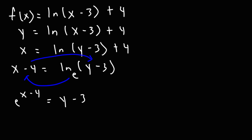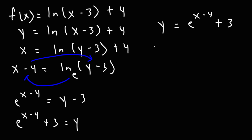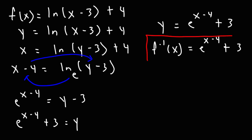In order to solve for y, we need to add 3 to both sides. If we move negative 3 from the right side to the left, it's going to change from negative 3 to positive 3. So we're going to have e raised to the x minus 4 plus 3 is equal to y. Next, we're going to replace y with the inverse f of x symbol and report this as our final answer. So the inverse of a natural log function will give you the exponential function with the base e.